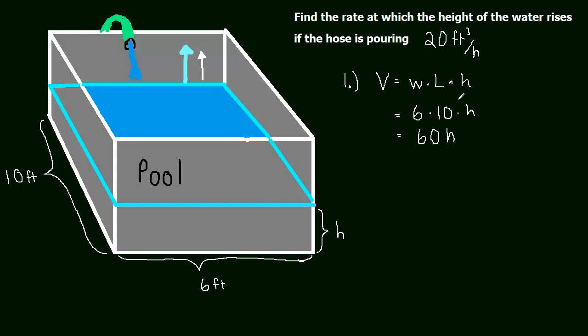And this is feet times feet times feet, right? Height is measured in feet, the width is measured in feet, and length is measured in feet. So the units on this are going to be feet cubed. And of course, volume we know is feet cubed.